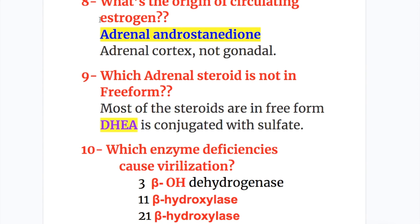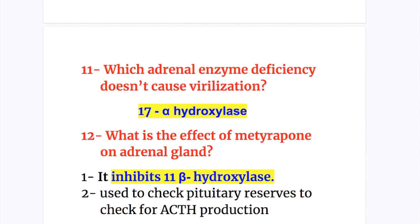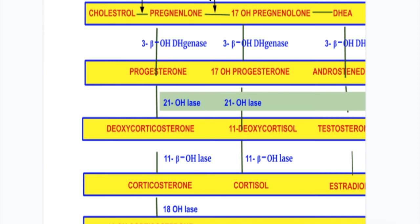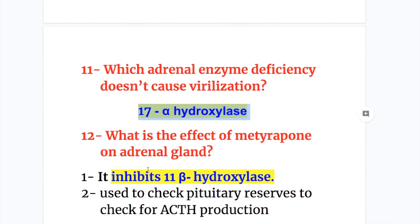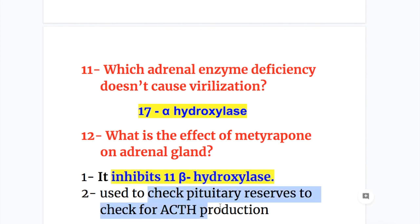Q8: The origin of circulating estrogens is adrenal androstenedione, arising from the adrenal cortex and not of gonadal origin. Q9: Most adrenal steroids are in free form; DHEA is conjugated with sulfate. Q10: 3 beta hydroxylase, 11 beta hydroxylase, and 21 hydroxylase deficiencies cause virilization. Q11: 17 alpha hydroxylase deficiency does not cause virilization because it leads to decreased DHEA and androgen production. Q12: Metyrapone inhibits 11 beta hydroxylase and is used to check pituitary reserves and ACTH production.